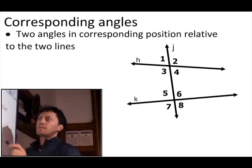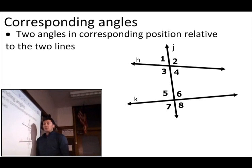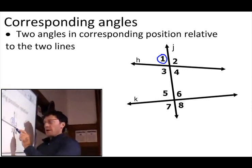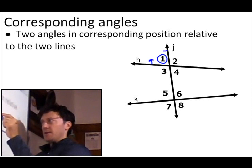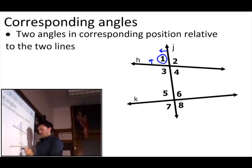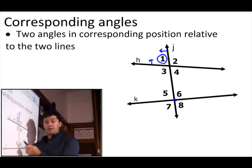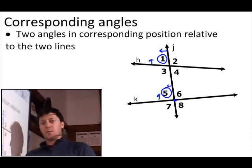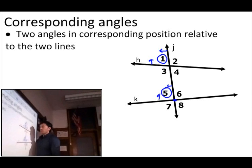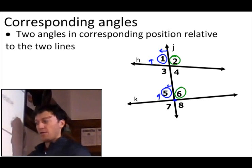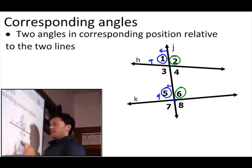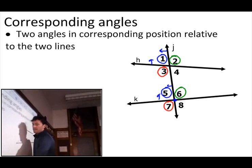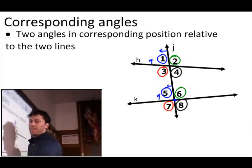Corresponding angles are two angles in corresponding positions relative to the two lines. Starting with angle 1: I went above the line being cut and to the left of the transversal. Going to the second intersection — above the line being cut and to the left of the transversal — gives angle 5. So 1 and 5 are corresponding angles. Similarly, 2 and 6 are both above the lines and to the right; 3 and 7 are both to the left and below; and 4 and 8 correspond as well.